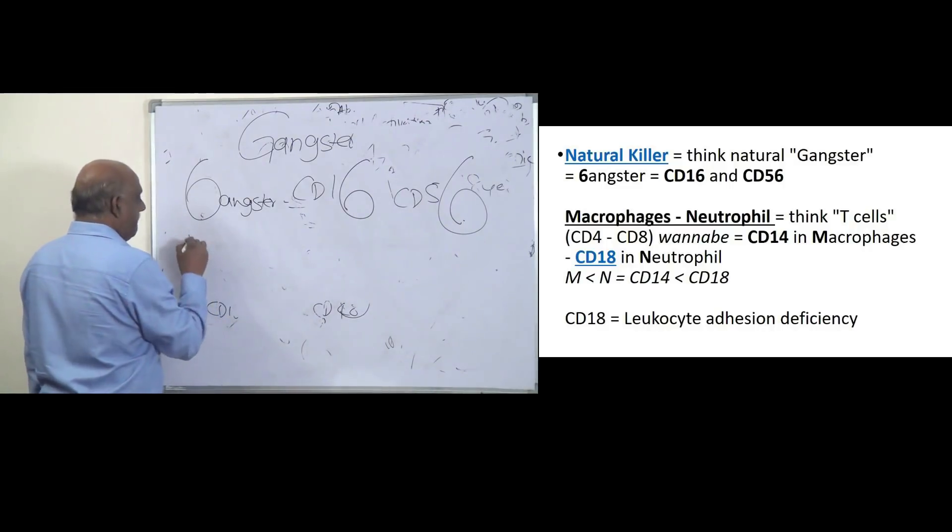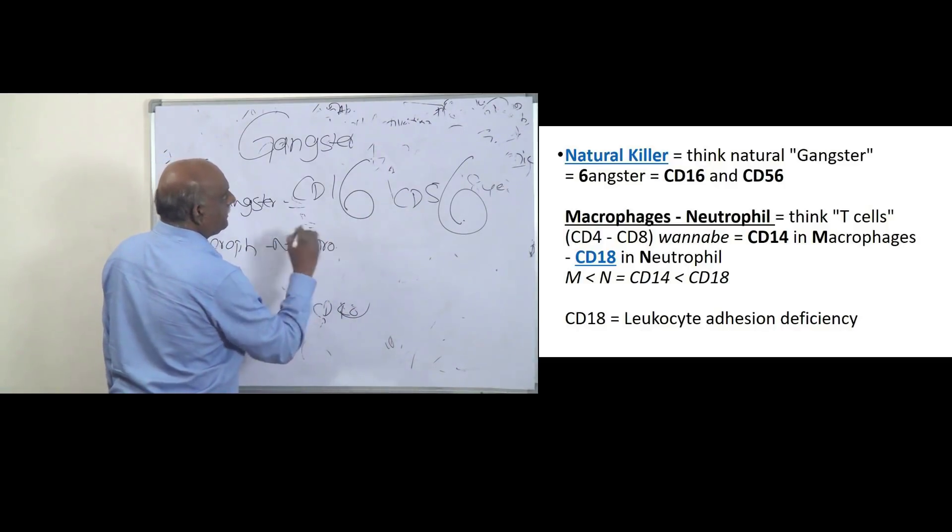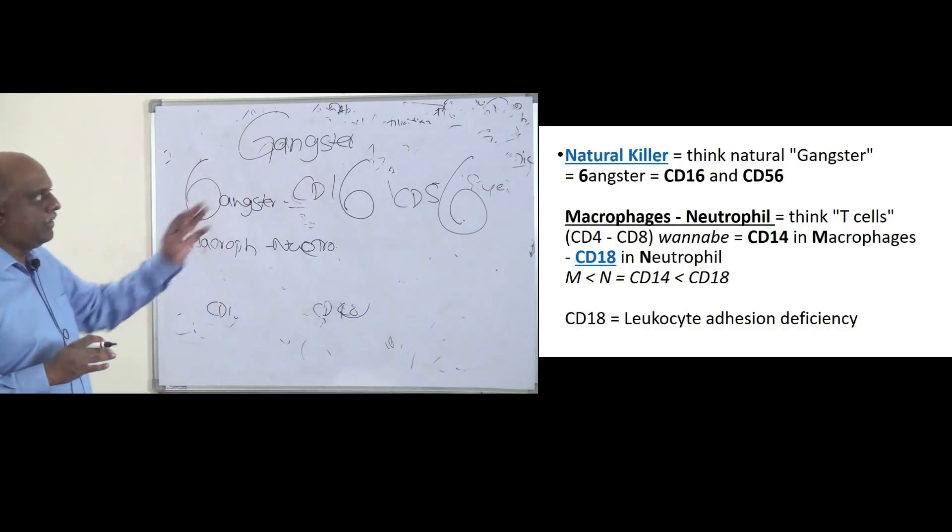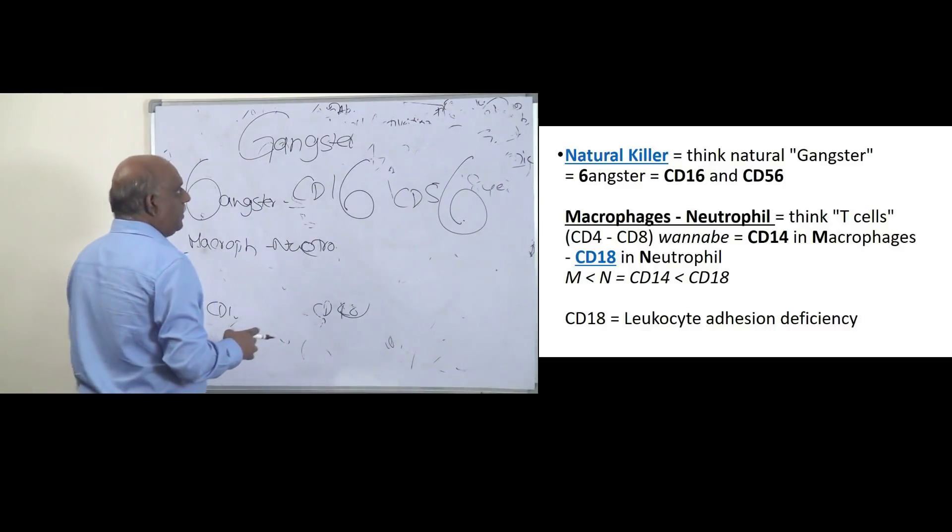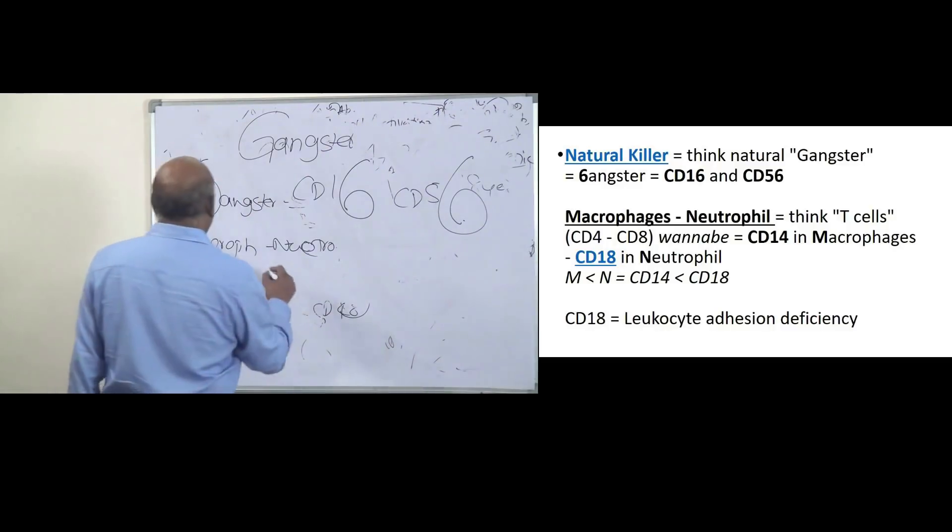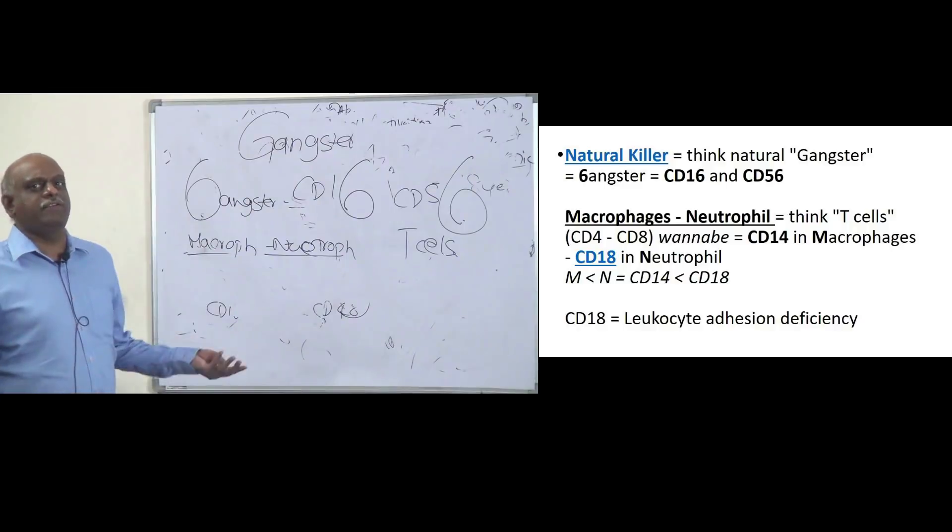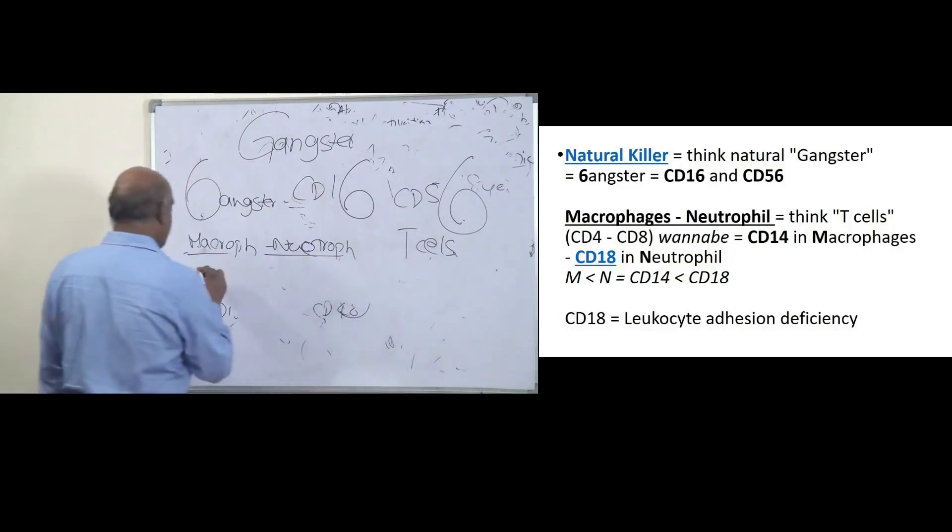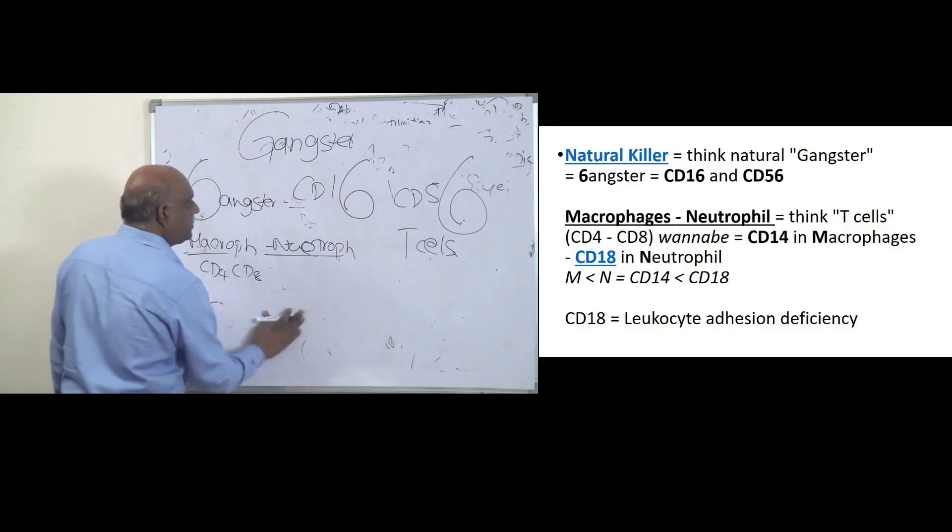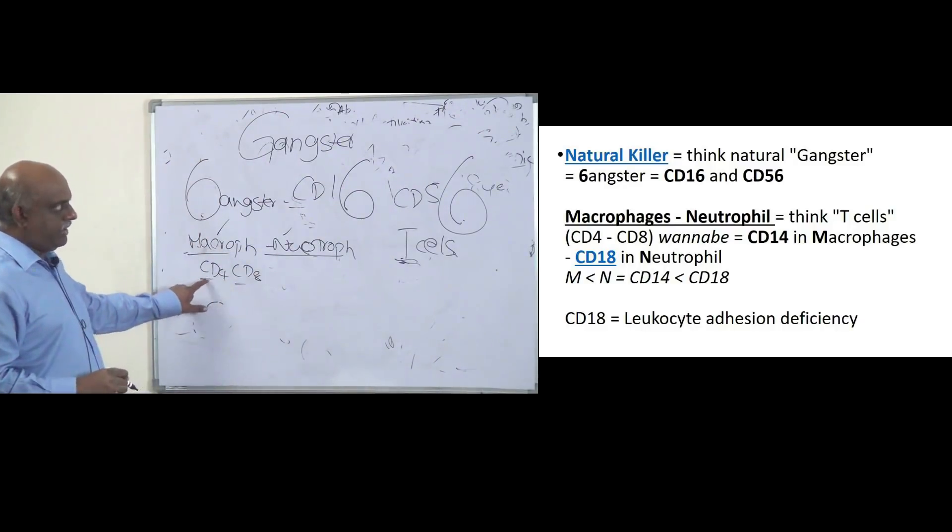Macrophages is something you need to remember. Then macrophages and neutrophils, how will you remember? You should remember that whenever we talk macrophages or neutrophils, we remember T-cells. T-cells means generally we remember what? Helper T-cells and killer cells. So you will only remember CD4, CD8, which are the T-cells. The moment you want macrophages and neutrophils, remember T-cells.